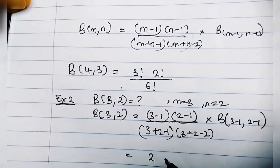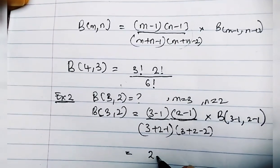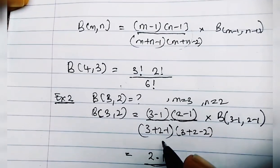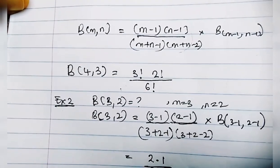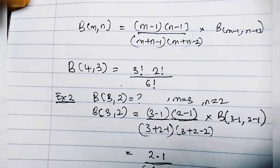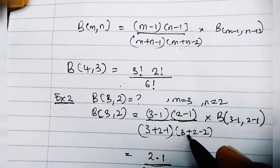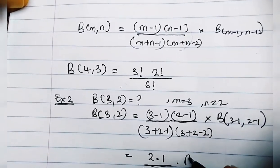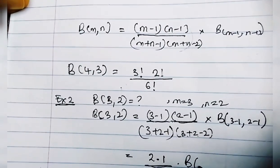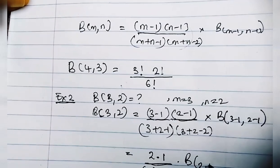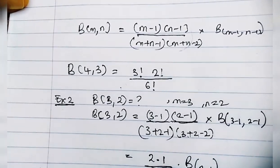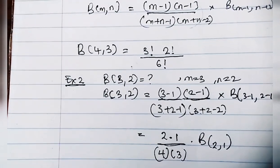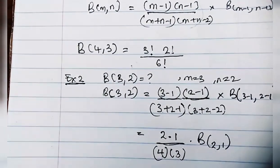Simplifying, the numerator gives us 2 times 1, and the denominator gives us (5-1)(5-2) = 4 times 3, then times Beta(2, 1). We also proved that Beta(2, 1) is equal to 1/2.